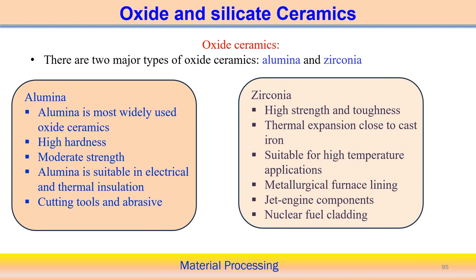Alumina can also be used as a cutting tool, since it is very hard and has very high strength even at elevated temperature. Therefore, it can be used as a cutting tool or abrasive, and can also be found in grinding tools.